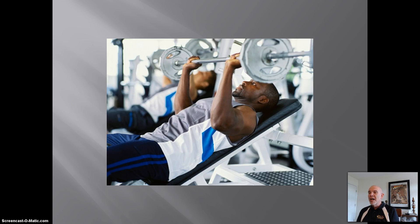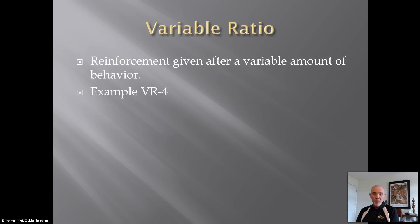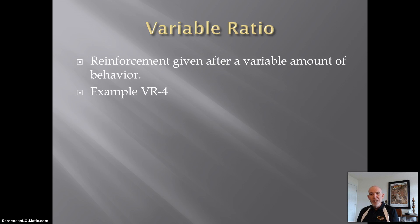Now coach wants a higher rate of behavior. He could provide reinforcement on average after every fourth set of weight lifting — sometimes after three sets, sometimes after five, sometimes after two, sometimes after six, and so on. But on average, it is after every four sets. We call this a variable ratio schedule of reinforcement. This is more difficult to figure out than a fixed ratio schedule — it keeps a person on their toes because you never know when the positive reinforcement is going to come, when coach is going to notice you. Our example would be called a VR4.